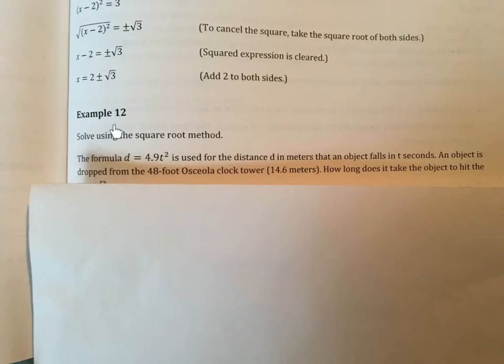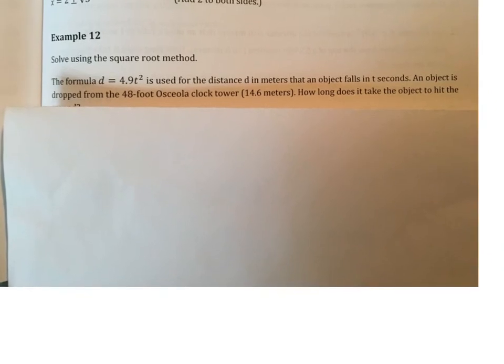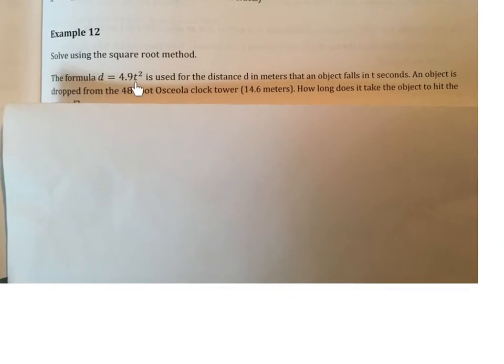Alright, example 12. Still on page 227. Solve using the square root method. The formula d equals 4.9 t squared is used for the distance d in meters that an object falls in t seconds. An object is dropped from the 48-foot Osceola clock tower, which is 14.6 meters. How long does it take the object to hit the ground? I must have knocked it off here. Alright, so let's write our formula. d, the distance, equals 4.9 t squared, and t stands for time in seconds. Distance is in meters. Object is falling time seconds.